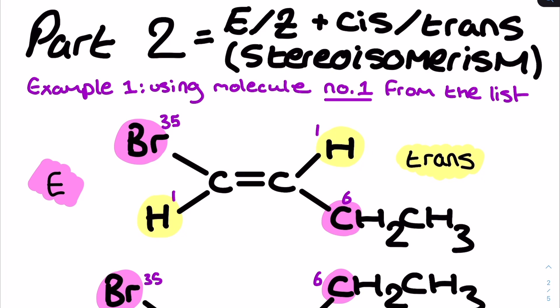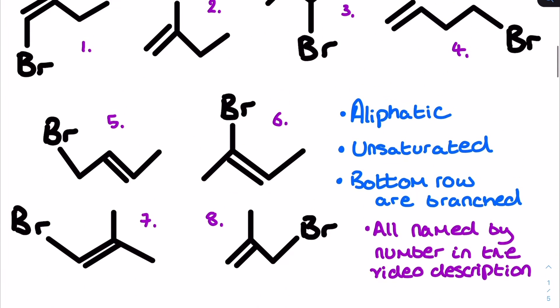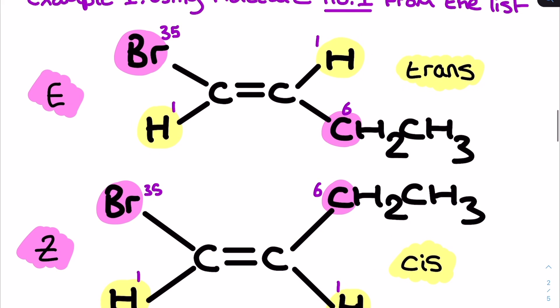Moving on to part two: stereo isomerism — specifically EZ and cis-trans, which you encounter when introduced to the alkenes topic in year one of A-level chemistry. The first example uses molecule number one from the list. To demonstrate this, I've drawn out the molecule showing the trigonal planar shape around each carbon in the double bond with 120-degree bond angles. What I need to do is go to each carbon in the double bond one at a time and identify the high priority group bonded to that carbon.